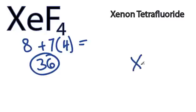We'll put xenon in the center, it's the least electronegative, and then fluorines on the outside, all 4 of them.